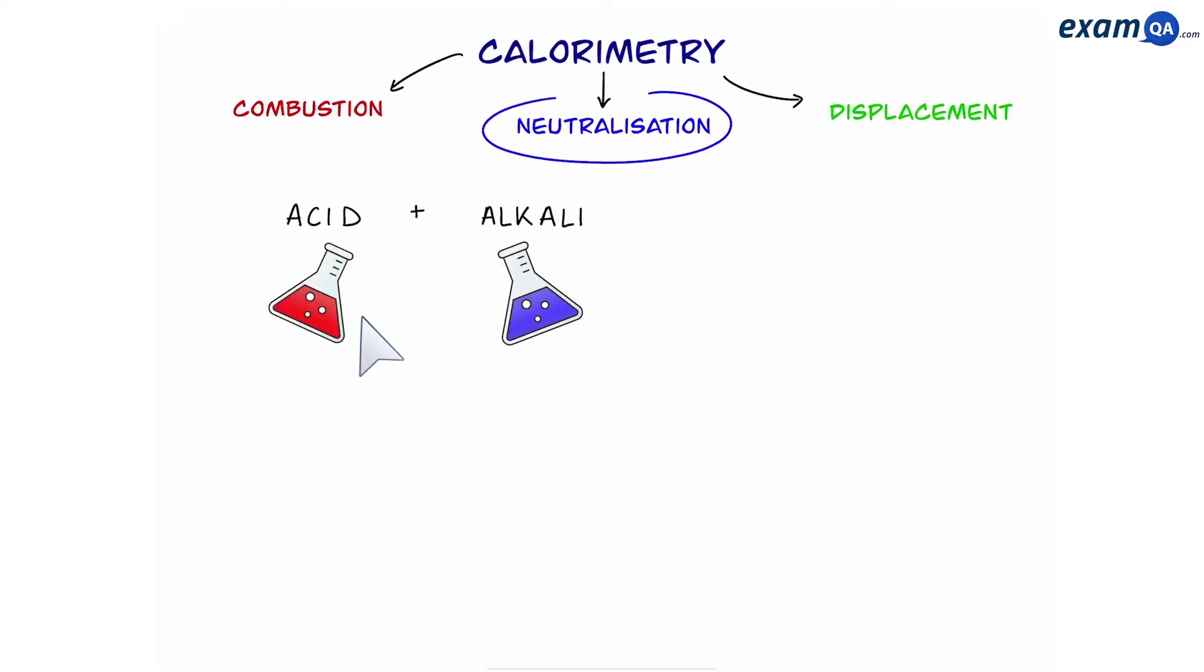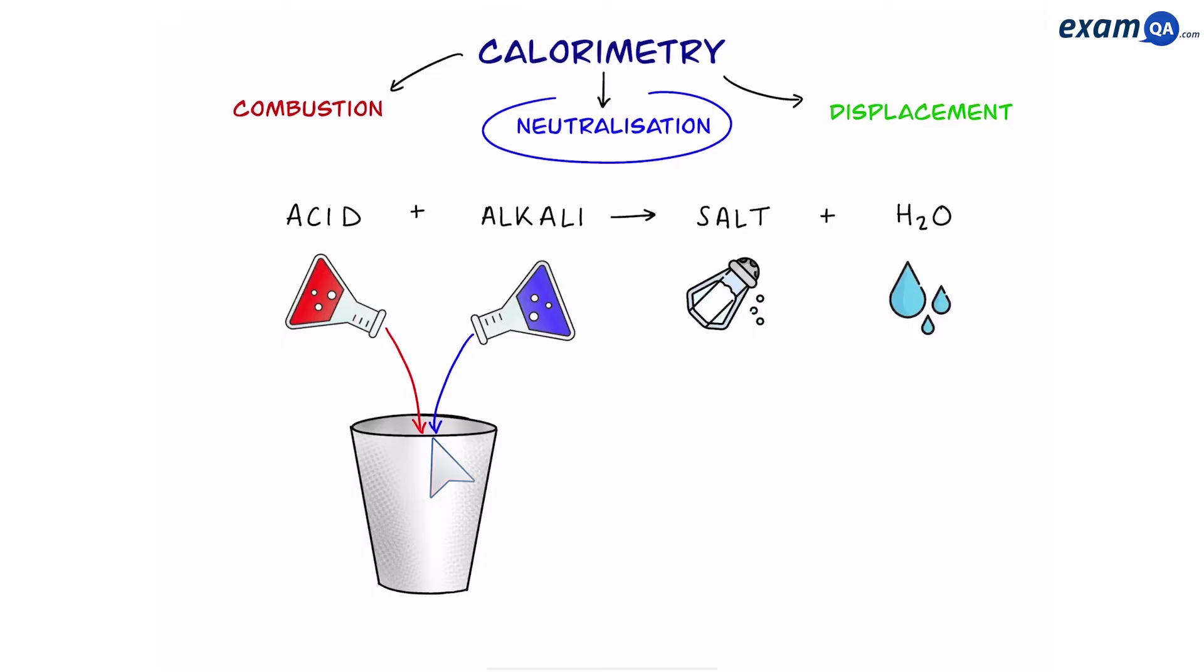In neutralization we take an acid and an alkali and mix them together in a beaker. This creates salt and water and there's going to be some sort of temperature change involved as well.